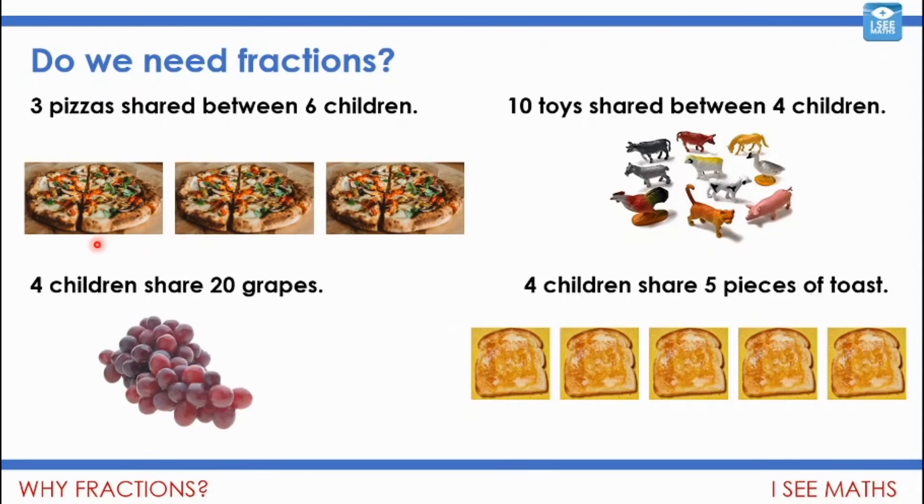Or maybe instead you thought three pizzas shared between six children. Cut each pizza in half. So then we would have six halves. So each child, we could describe them as having three sixths or a half. But either way, we're using fractions to cut up those three pizzas.